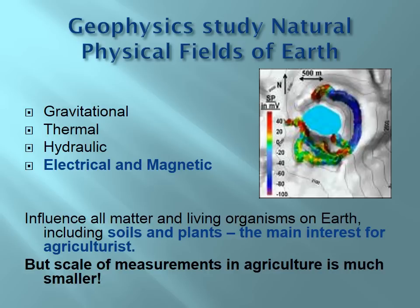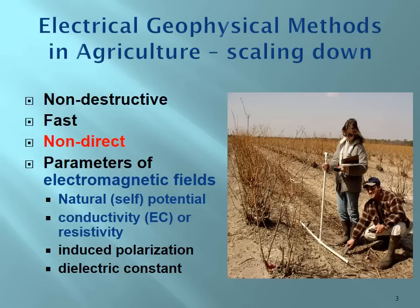The problem is that the scale of measurements in agriculture is much smaller than in conventional geophysics. To use electrical geophysical methods in agriculture, we can bring a lot of benefits to our studies. First of all, all of those methods are non-destructive — we don't need to collect soil samples, we can just take measurements from the soil surface. Methods are also very fast, however all the methods are non-direct: they don't directly measure properties of interest in agriculture such as soil bulk density or pH. They measure parameters of electromagnetic fields such as natural electrical potential, also called self-potential, and electrical conductivity or resistivity.